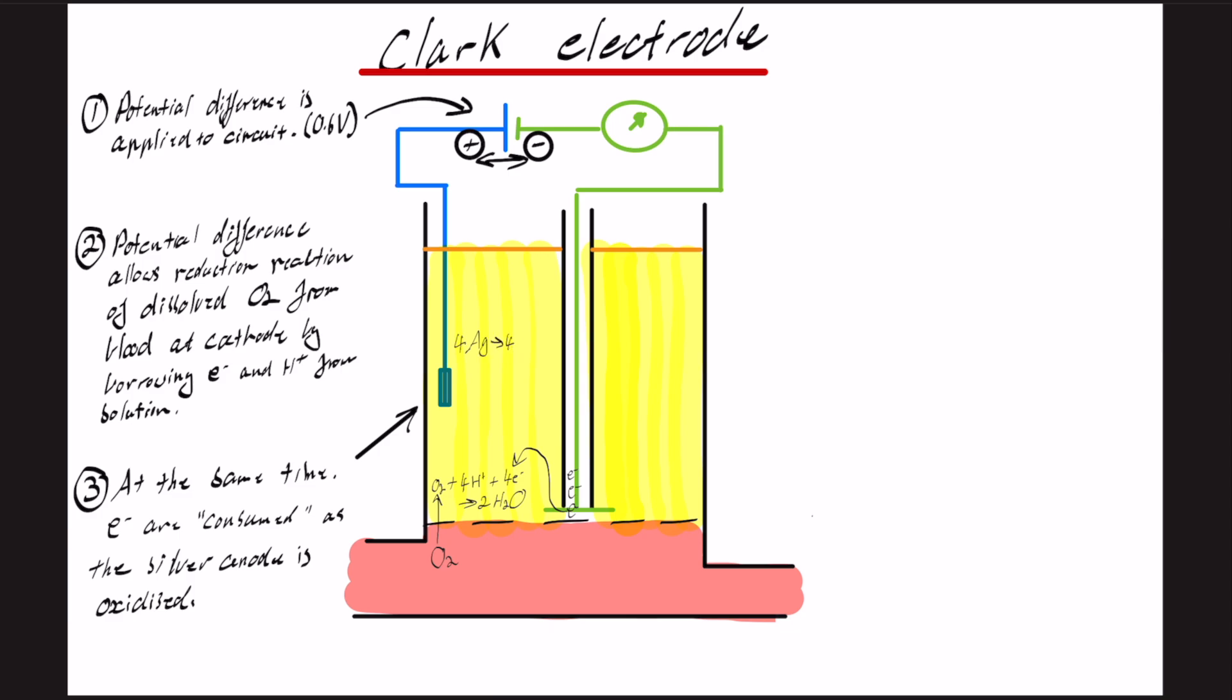And this reaction is that four silver, it's then charged by the potential difference, and this produces four electrons, which are consumed. And the charged silver binds with our negative chloride, and this makes silver chloride.